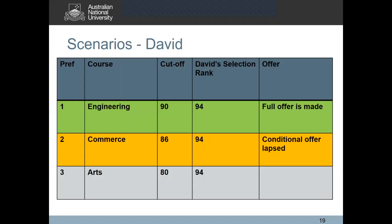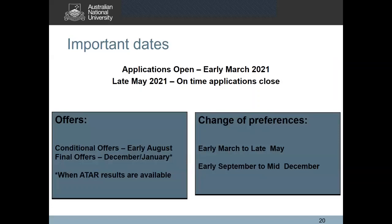I hope this scenario put all of the information into context and you understand how you can apply directly to ANU. Now let me tell you a few important dates you need to be aware of. Applications will open in early March 2021 and they will close in late May. Please note that we do not accept any late applications, so we encourage you to apply as early as possible. This will give us time to review your application, and in case any additional documentation is required, you will have sufficient time to provide that. Please make sure that you have also answered all the scholarships and accommodation questions because you would not get another opportunity to edit them. Conditional offers will be released in early August and final offers will be made in December or January, depending on when ATAR results are available.